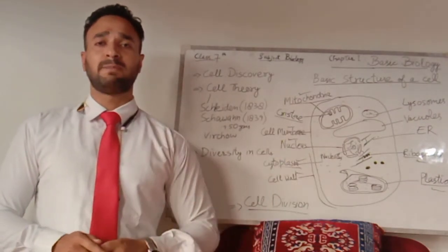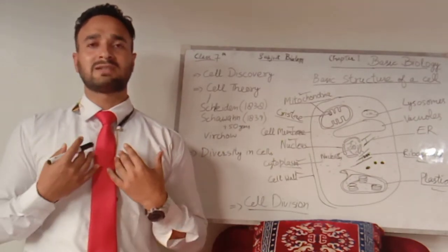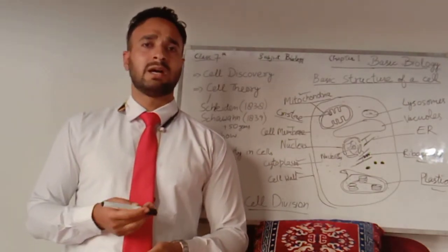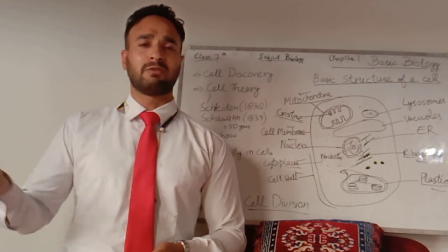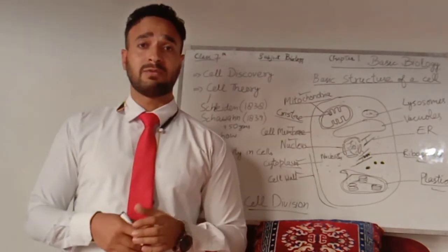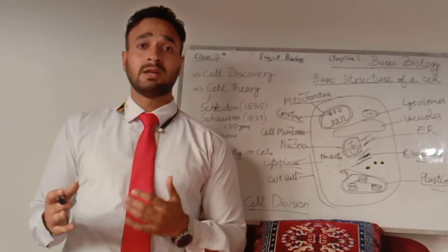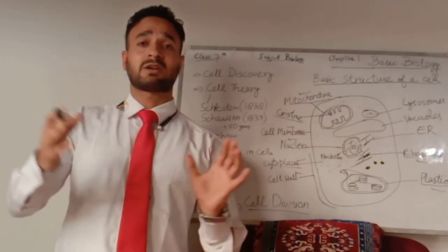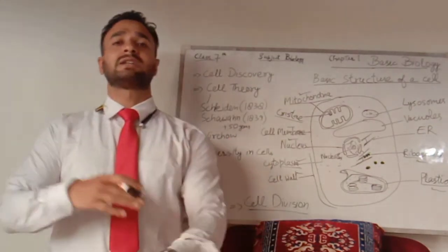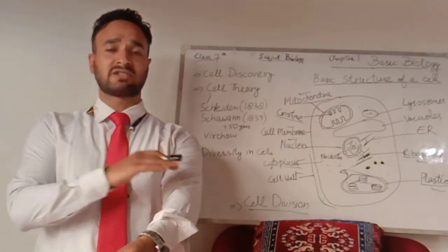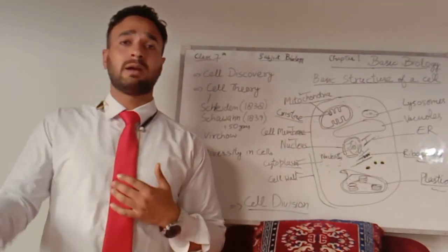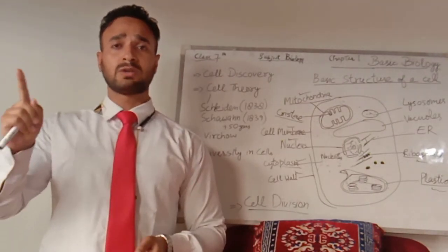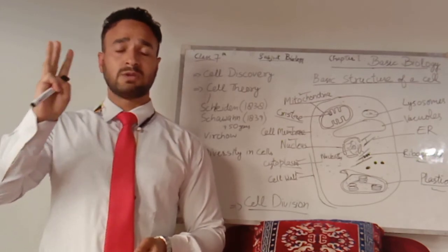The purposes of cell division are: first, to increase number; second, for repairment. Our cells have a definite lifespan — red blood cells live three to four months, WBCs a few weeks, and platelets five to seven days. In reality, cells are continuously dividing. We shed our skin continuously, but those skin cells are replaced by new cells. So cell division is necessary for growth, repairment, and increasing cell number.